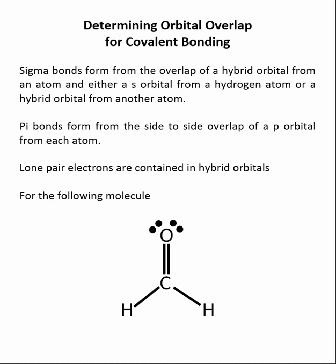Being able to describe what orbitals overlap to form the covalent bonds in a molecule is an important skill. Sigma bonds form from the overlap of a hybrid orbital from an atom and either an s orbital from a hydrogen or a hybrid orbital from another atom. So primarily sigma bonds are made up of s orbitals and hybrid orbitals. Pi bonds are made from the side-to-side overlap of a p orbital from each atom involved in the bond. Hybrid orbitals are never used to make pi bonds.